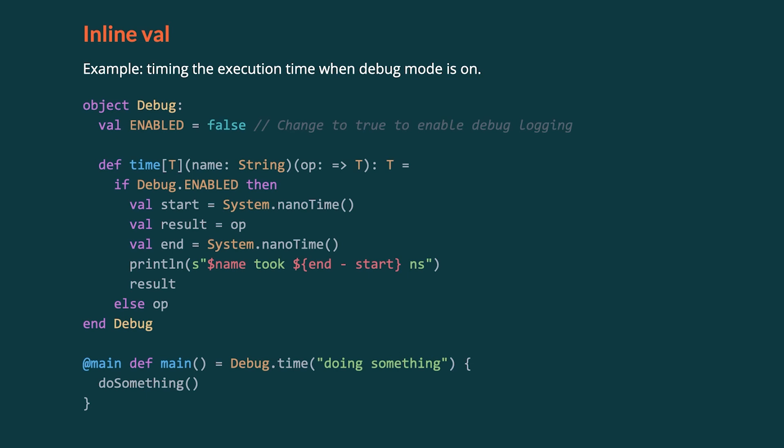Let's now take a look at another place where you can use the inline keyword. You can use the inline keyword before val to tell the compiler that a value is a compile time constant and usages can be replaced with the actual value. In this example we have a debug object with a flag called enabled, a boolean flag, and we have a time function which, depending on the value of debug.enabled, either runs an operation and prints how long it took or just runs the operation without timing it. Then in our main function, we wrap our call to doSomething inside of debug.time. Note here that op is a by-name parameter, so it's only being executed when it's referenced inside of time and not before being passed to time.